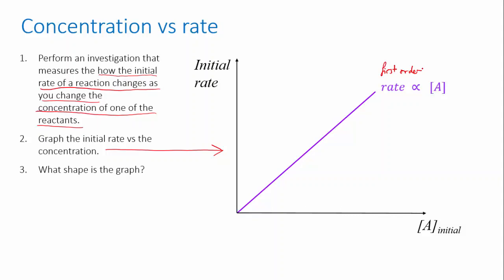If the rate has a parabolic dependence on concentration, you get a curve like this, then we know that the rate is proportional to the square of the reactant concentration, and we say that the reaction is second order with respect to A.